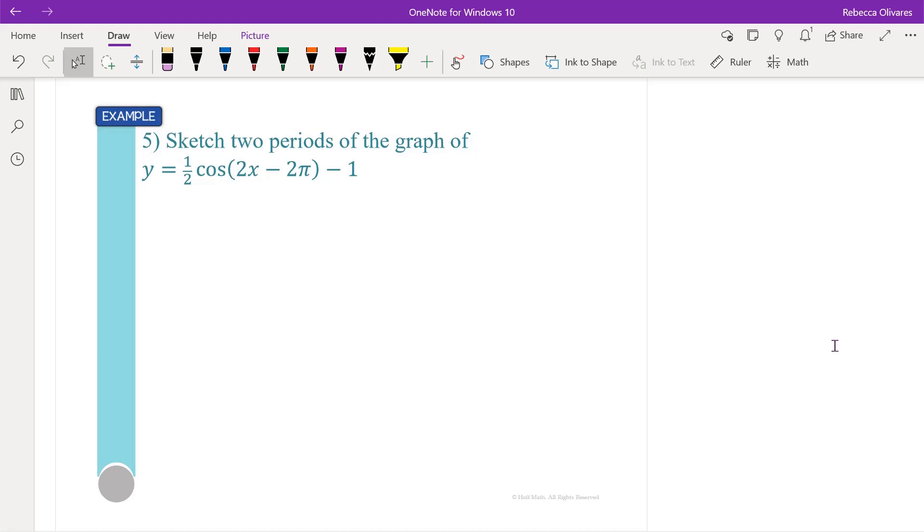We're going to sketch two periods of the graph. What we do is we start with the analyzation that we did before. We want to find the amplitude and the period and the phase shift and the vertical translation.